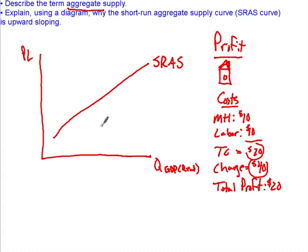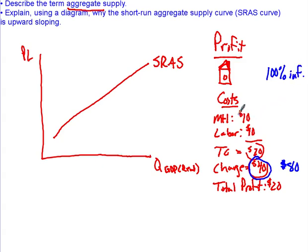Let's say that inflation hits the United States — really bad inflation — and prices go up by a hundred percent. What's going to happen to what we charge for the birdhouse? That is going to double, so that becomes eighty dollars. We're assuming a hundred percent inflation, which is dramatic, but it proves the point. Now let's say you're the birdhouse maker and you had signed a contract with Lowe's to buy wood at ten dollars per birdhouse, and you signed this contract for a year last month.